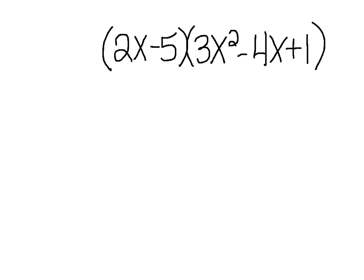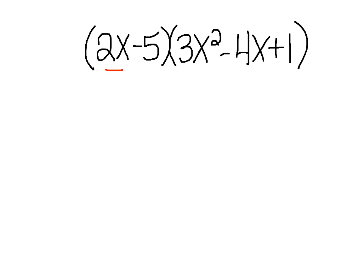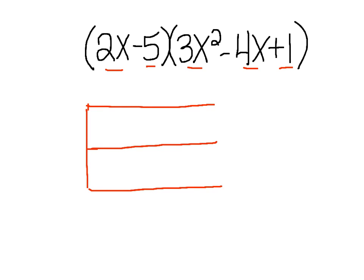Now we're going to look at how to multiply polynomials using the box method. Again, it's the same exact concept, but now we have a binomial — 2 terms — multiplied by a trinomial, which is 3 terms. When setting up our box, we want one square for each term. So we're going to have 2 rows for our binomial and 3 columns for our trinomial. This is an especially great way to multiply polynomials because, as you saw with the distributive property, it can get pretty confusing and very long really fast.